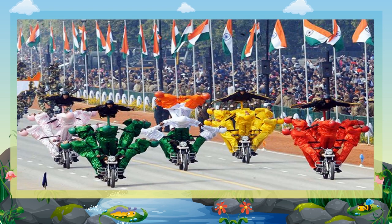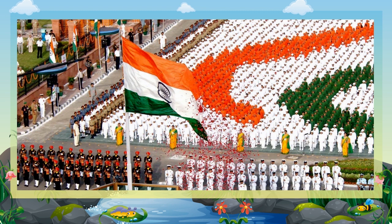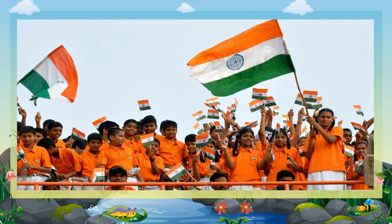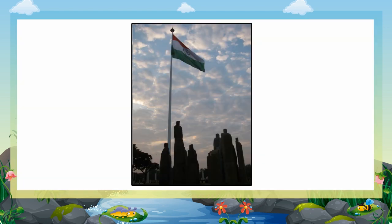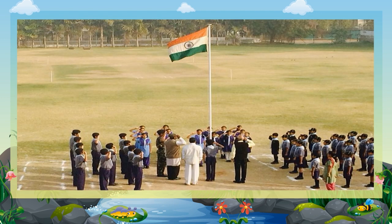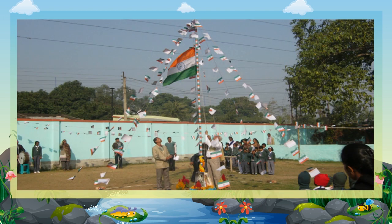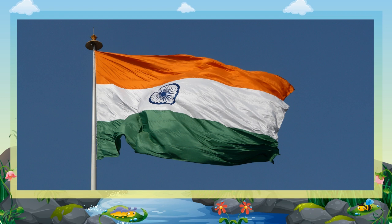Our National Flag is hoisted on the Republic Day, the Independence Day and other national festivals or important days. There are certain rules which we have to follow while hoisting our national flag. The saffron band should be at the top when the flag is raised. The national flag should always be taken down at sunset. Whenever the national flag is hoisted or lowered, we must stand at attention and salute it. While other flags are being hoisted in a row, they should be to the left of the national flag. The flag should not be dirty or torn when it is hoisted.